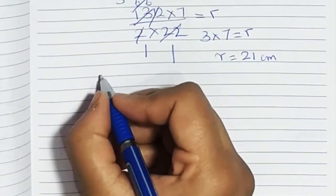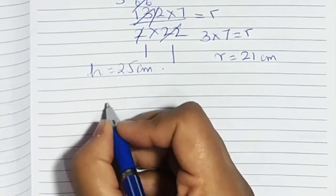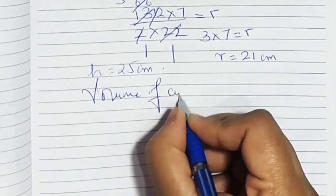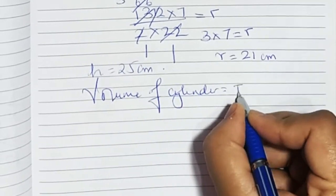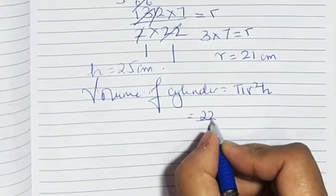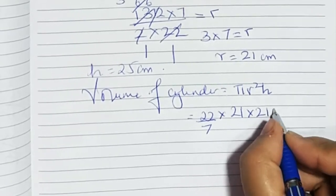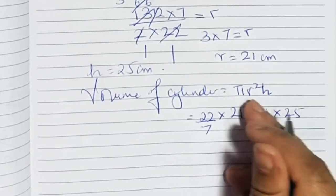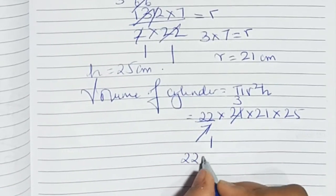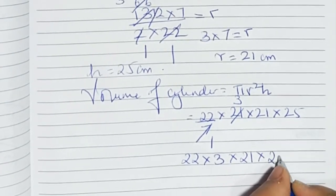We know the height is 25 centimeters. Now we have to find the volume. Volume of cylinder equals pi r squared h, that is 22 upon 7 into 21 squared into 25 — so 22 upon 7 into 21 into 21 into 25. Simplifying, 7 threes are 21, so we get 22 into 3 into 21 into 25.